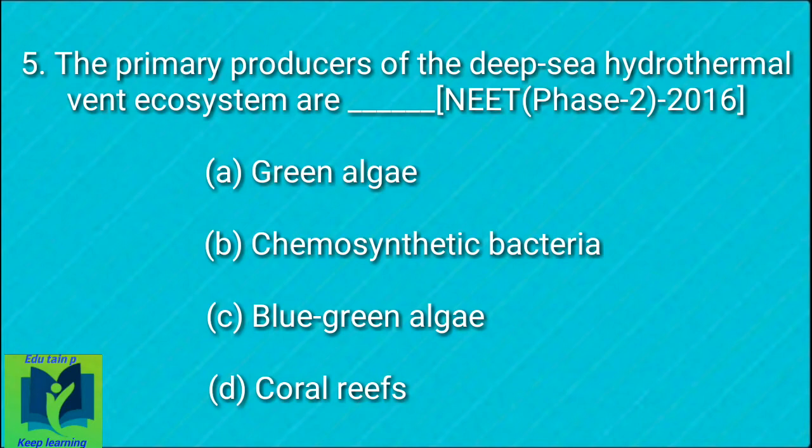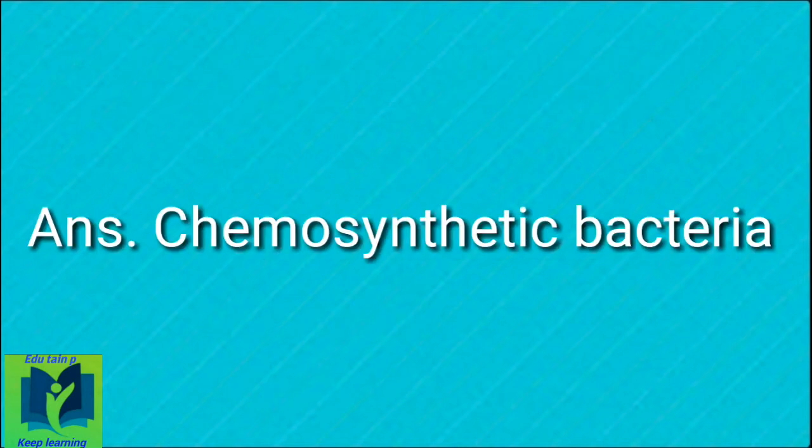The primary producers of the deep-sea hydrothermal vent ecosystem are: Option A: Green algae. Option B: Chemosynthetic bacteria. Option C: Blue-green algae. Option D: Coral reefs. Answer: Chemosynthetic bacteria.